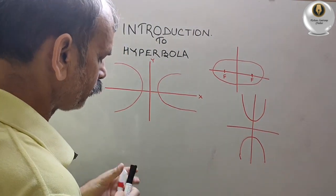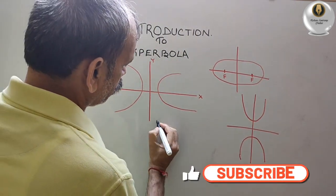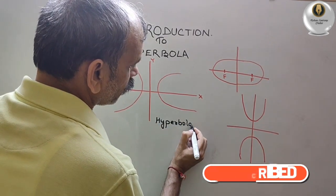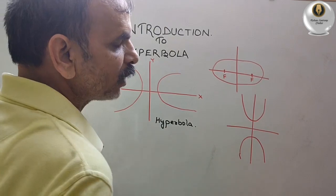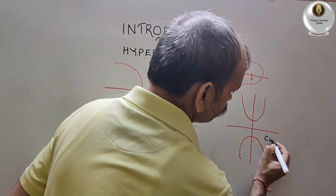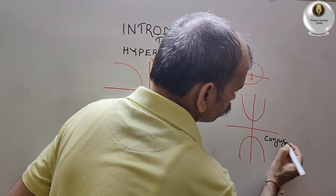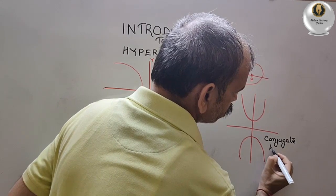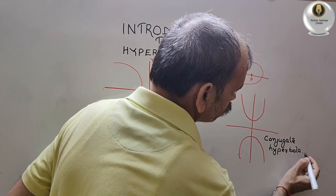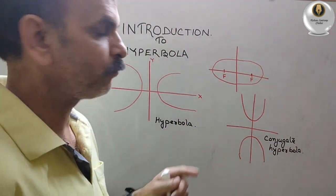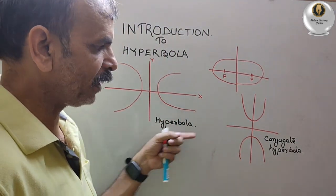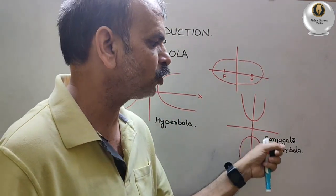Understand this. And this is known as conjugate hyperbola. Now, understand what is hyperbola: the x-axis version is hyperbola, and in the y-axis, it is a conjugate hyperbola.